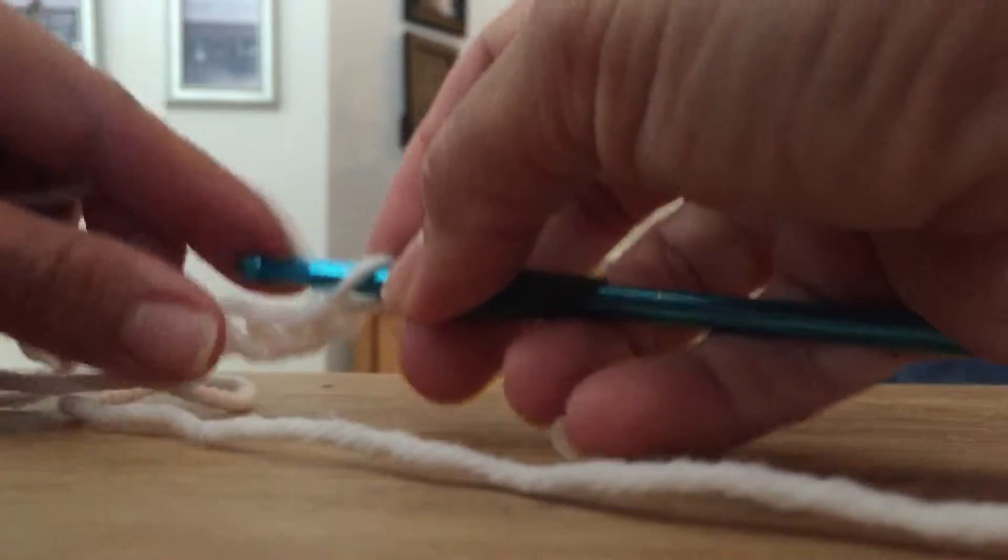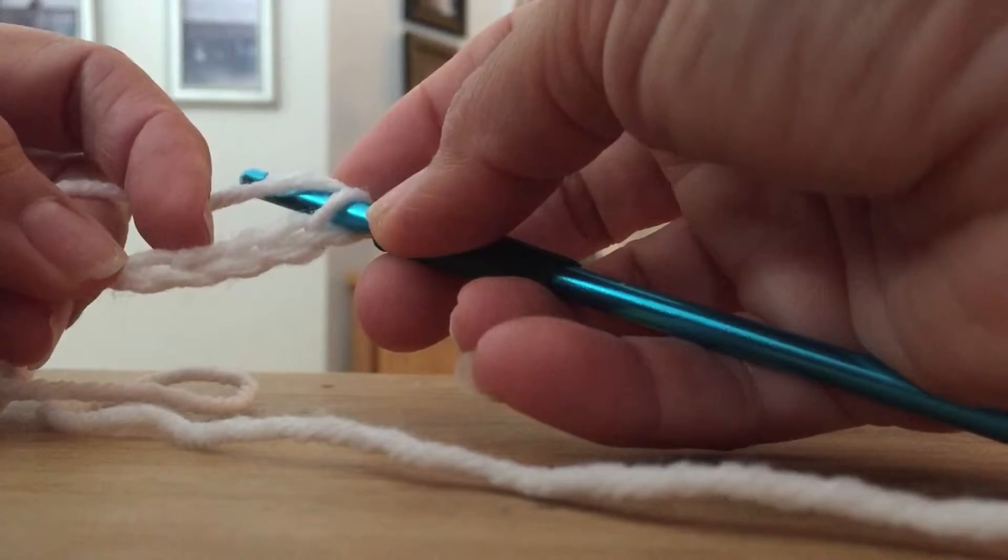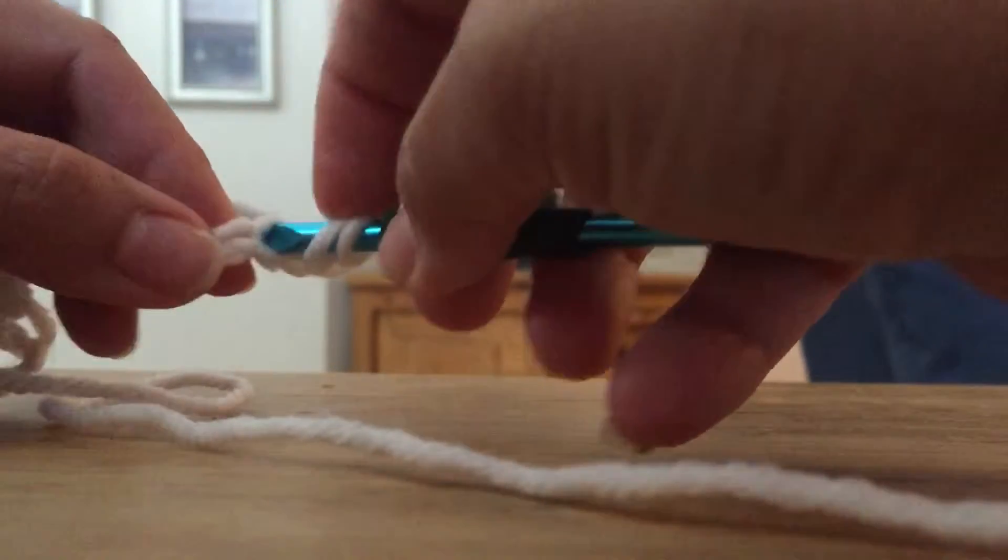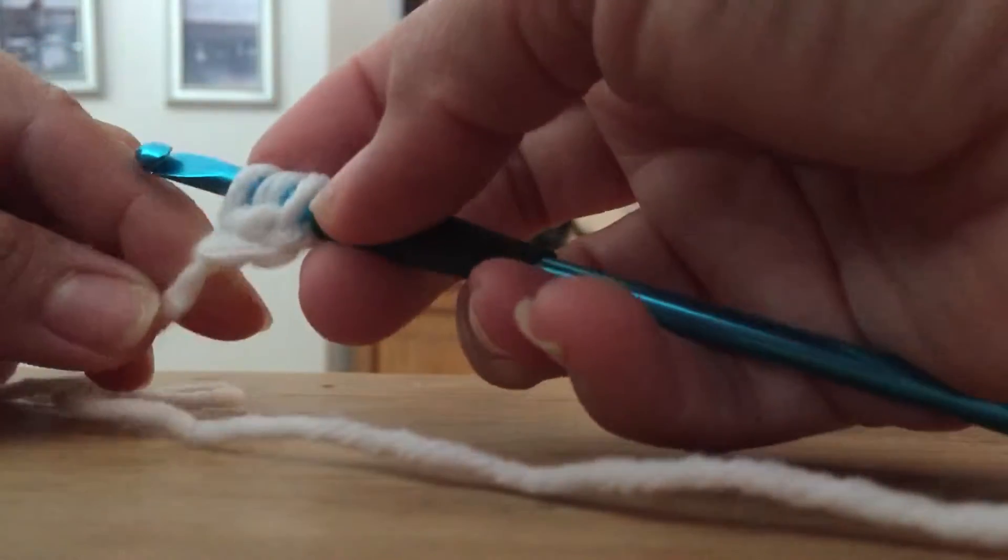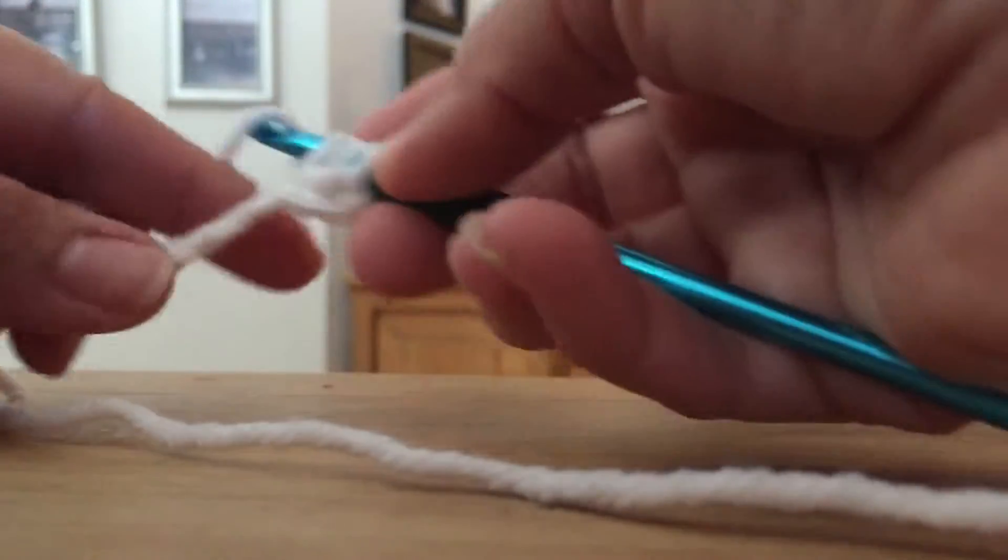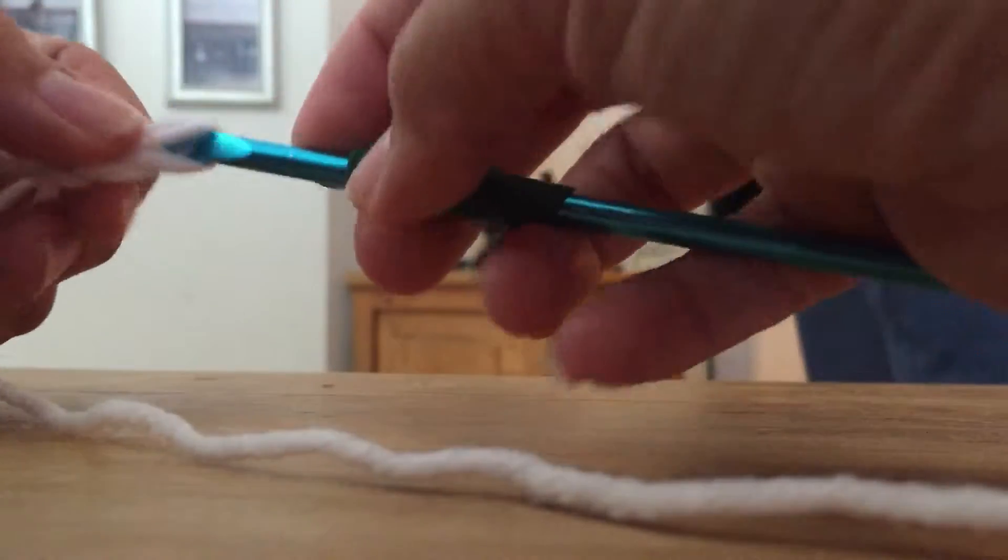So what you do is you yarn over once, skip the first two, and go into the next chain right there. And you go in, pull up one. Now you've got three chains on the hook this time. Yarn over, pull two, yarn over, pull two.